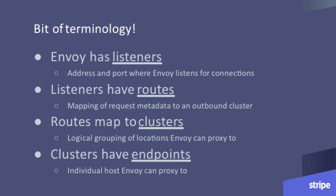A bit of terminology before we dive into how the XDS protocol actually works. Envoy has a number of listeners associated with it — a place where Envoy can listen for connections and then proxy requests through. Each of these listeners has a set of routes, which is a mapping of request metadata to a location that Envoy should send traffic. Each of those locations is referred to as a cluster, which is a logical grouping of hosts. And then each one of those hosts or destinations that Envoy can physically route traffic to is called an endpoint.